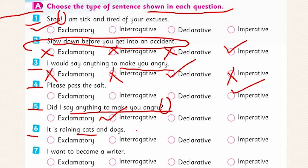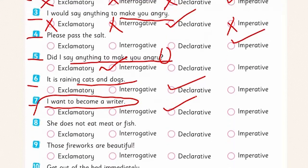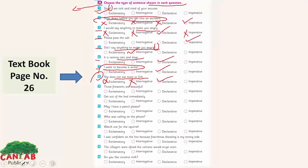Look at the sixth one: 'It is raining cats and dogs.' This is a declaration, so it is a declarative sentence. Look at the seventh: 'I want to become a writer' — the same example we discussed earlier. It is also declarative because it declares that he wants to become a writer. Look at the eighth one: 'She does not eat meat or fish.' It is not interrogative or exclamatory — it is a declarative sentence, declaring that she does not eat meat or fish.